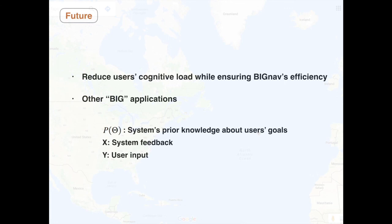In future work, we plan to improve the usability of Big Nav. We also want to apply this approach to other interaction tasks. The probability of theta can model any prior knowledge about the user's intention, X can be any system feedback, and Y can be any user input.